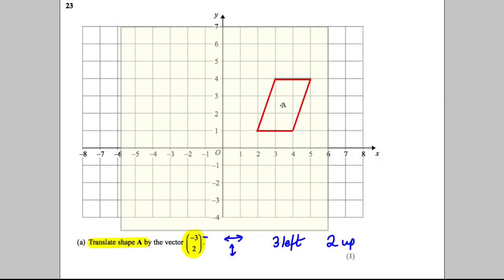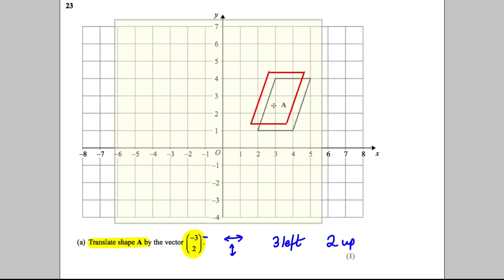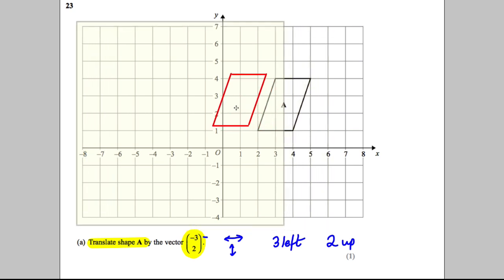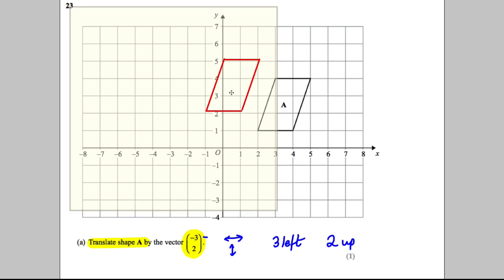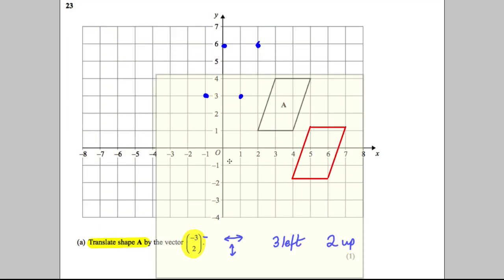We'd move it three left and two up, so one, two, three left and two up, one and two. Then you peel back your tracing paper, put a mark there, a mark there, mark there, a mark there, and get rid of your tracing paper.